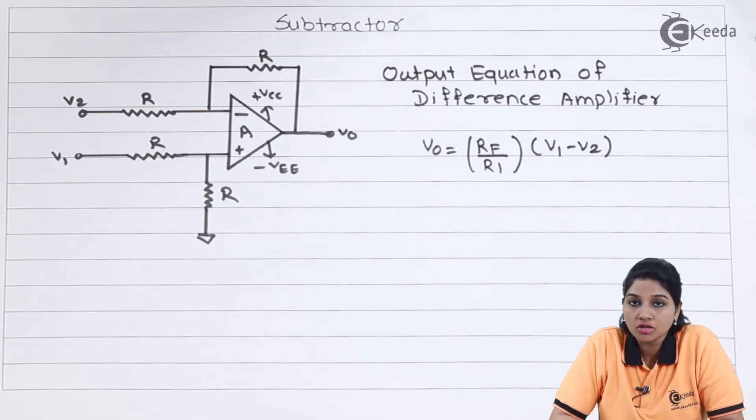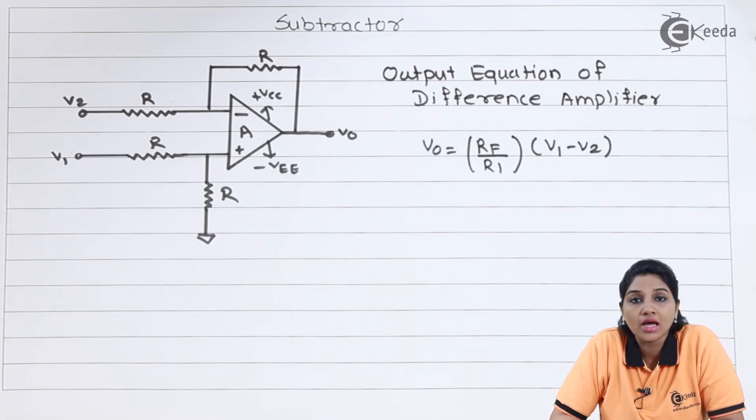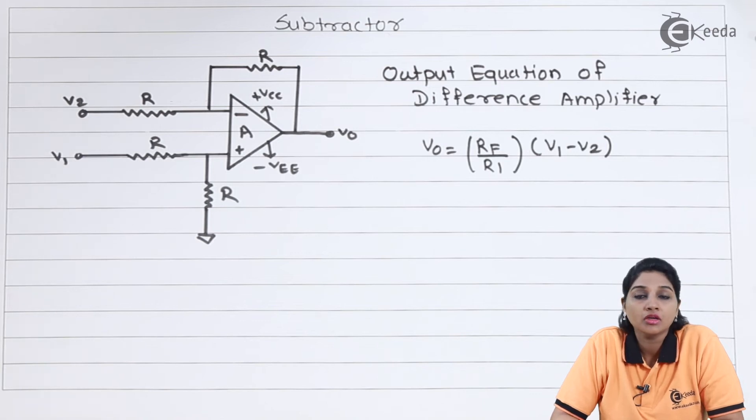When we apply superposition theorem to input V1, that means we consider input V2 and we suppress V1 to ground. So in that case, the circuit becomes similar to inverting amplifier and we'll get output voltage V0 as minus RF by R1 into V2.